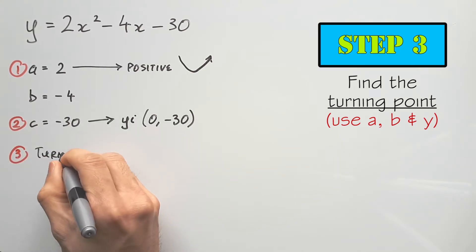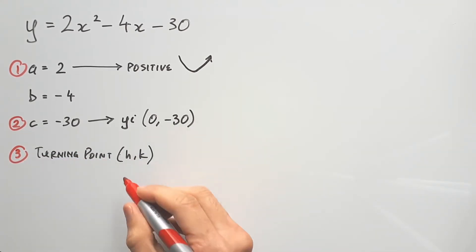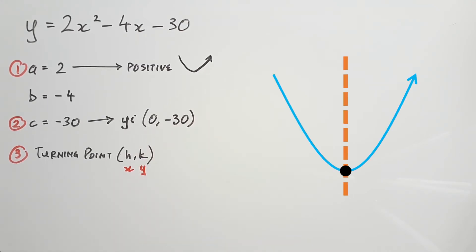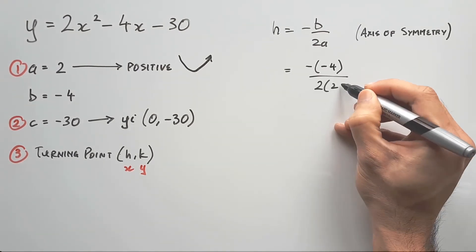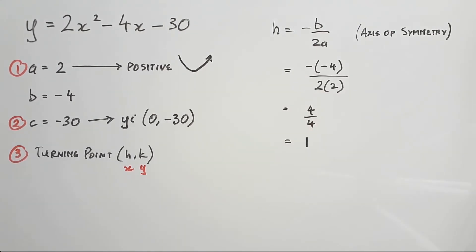Step 3: Find the turning point. Keep in mind, h is an x value and k is a y value. The turning point sits on the axis of symmetry, so we first find h by using the axis of symmetry formula, negative b on 2a. Plug in the a and b values to find h is positive 1.